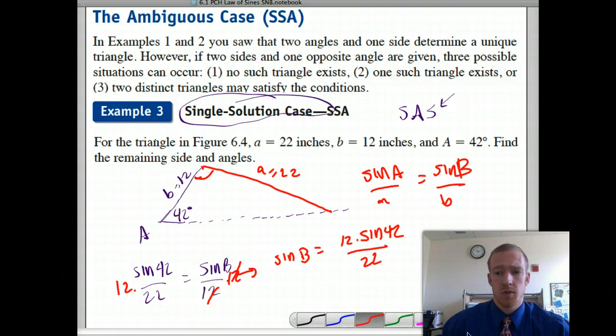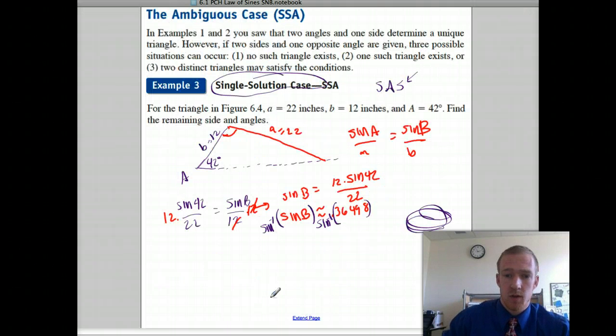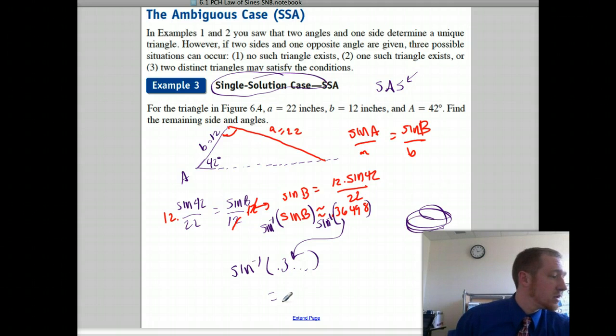You got to make sure that you're in degree mode. And that gives you approximately 0.36498. You leave that value in your calculator and what you should do is sine inverse both sides because sine of B equals that. So I want to do the sine inverse, and that gives us approximately 21.41 degrees.